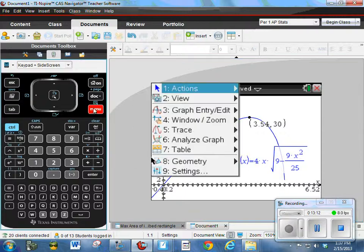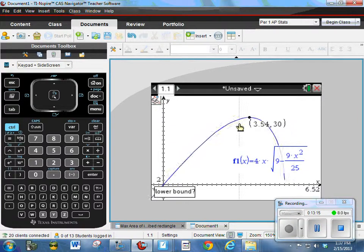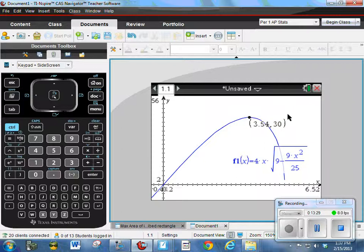I think I'm going to try one more time just to do it. Menu, analyze graph, maximum. Okay. It looks like I can take my cursor and move it and maybe if I push enter or maybe kind of click on the click pad. And then move my cursor over to the right and click on the click pad again. Then it finds the maximum. I think that's, I'm working on the calculator on the computer so it's a little more difficult to do that. So what did I find out? I found out that when X is 3.54, the area, the maximum is 30. So the maximum area of this inscribed rectangle occurs when X is 3.54 and it's 30.